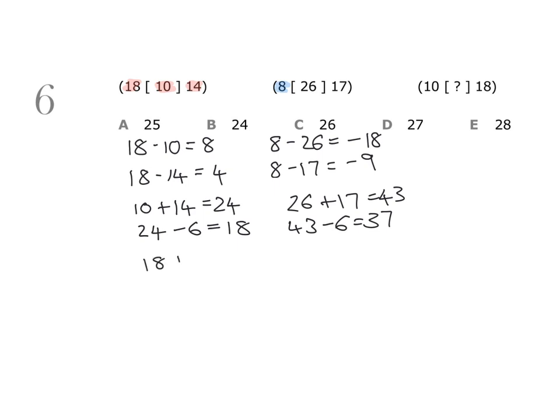Then I decided to try adding the first two numbers. If I do 18 plus 10, I get 28. Looking at 28, I realized there's a relationship between 28 and the last number 14, because 14 times 2 is 28. So I can take the 28 and divide it by 2, and that gives me 14, the last number.